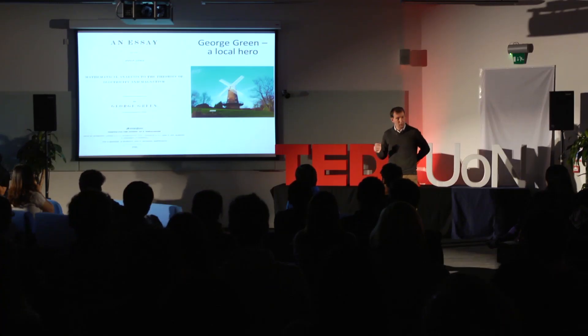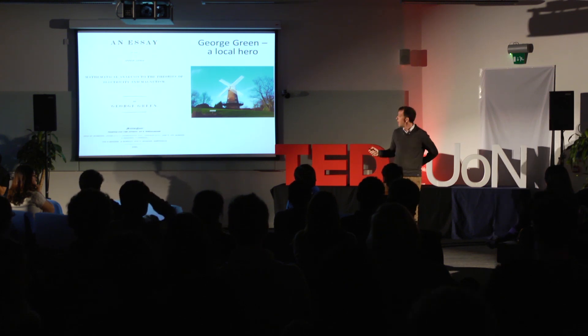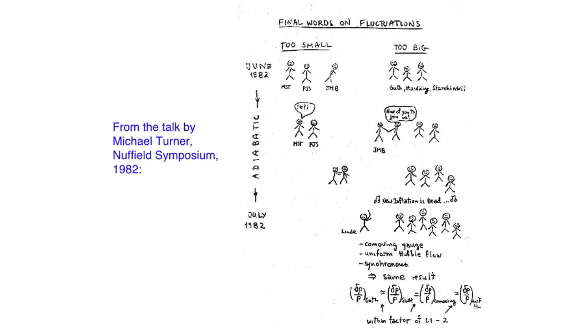They got together in Cambridge, where they made use of machinery developed by a phenomenal local man called George Green. George Green's full education ended when he was eight — he had to run his father's windmill, and yet he taught himself mathematics at a level that hadn't been developed at that stage. The very mathematics he taught is the very mathematics you need for these fluctuation calculations. This is a summary slide of the talk given by Michael Turner at the 1982 meeting — a timeline from June to July 1982. Initially there were two camps: one saying the fluctuations were too small, the other saying too large. They had collaborations, seminars, talked, no doubt went to the pub — and gradually people moved from one camp to the other until they all agreed on the value of the density fluctuations. This is what we use today.